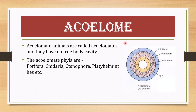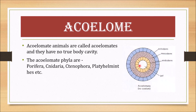Next is acoelomate — meaning without a coelom. In this case, there is no body cavity. Acoelomate animals have no true body cavity. They have ectoderm, mesoderm, endoderm, and gut, but no cavity between the gut and the body wall.